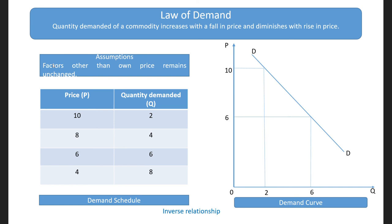Similarly, when income of a consumer increases — suppose earlier a person consumed 50 units of a good with an income of Rs.500, and with that income he could only purchase 50 units. Now if his income increases to Rs.1000, he has Rs.500 extra. In that case, even if there is a slight increase in price of the commodity, he will not mind purchasing some extra units because he has extra income. So our assumptions must always be maintained in order to observe this inverse relationship between price and its quantity demanded.